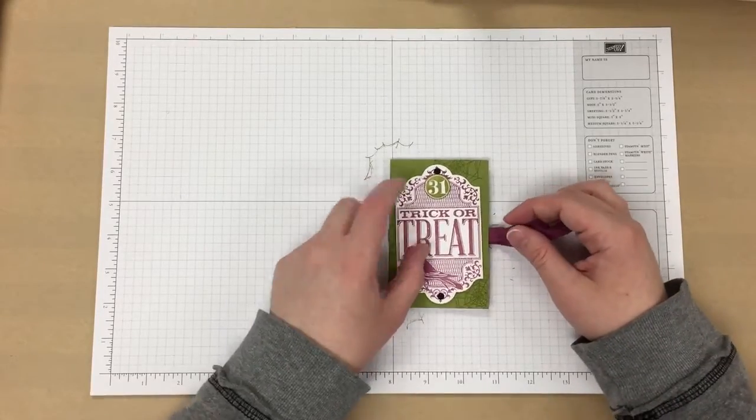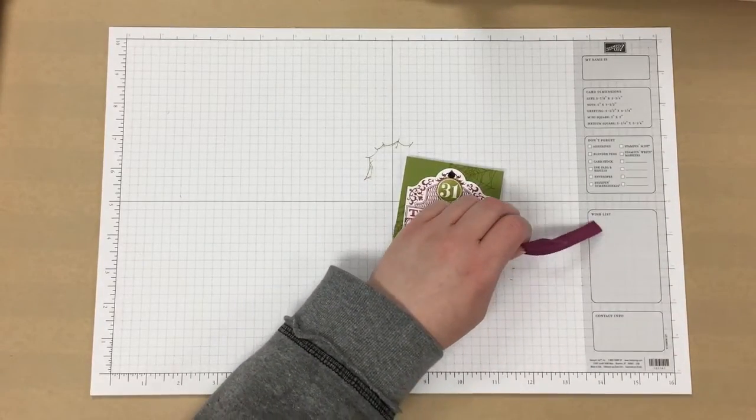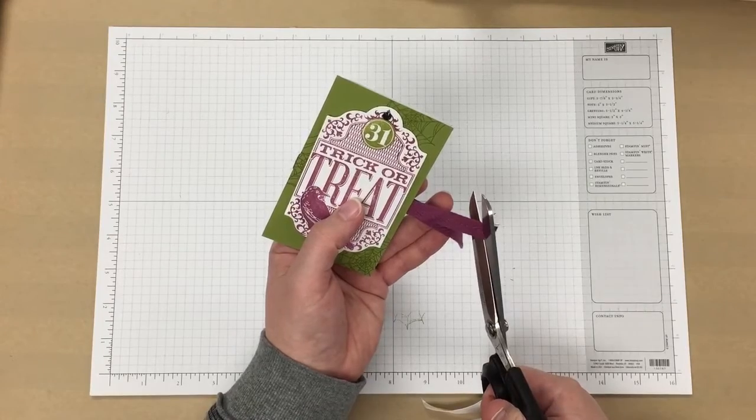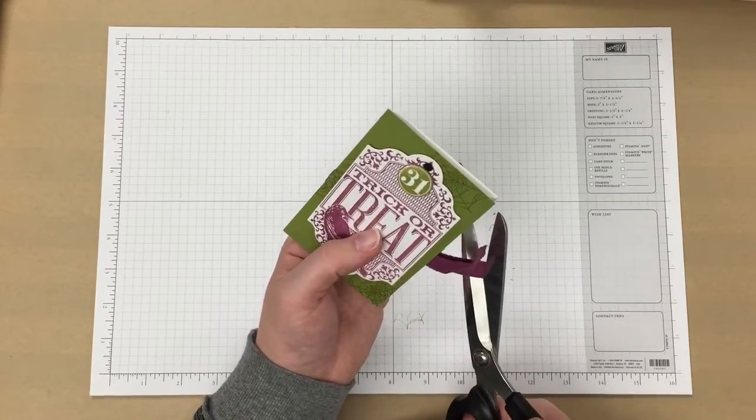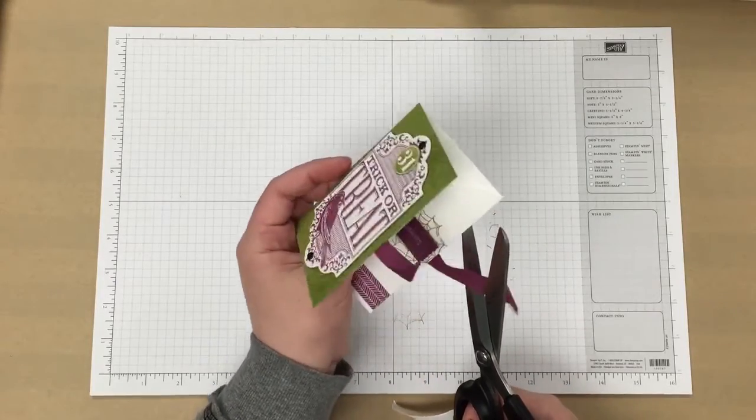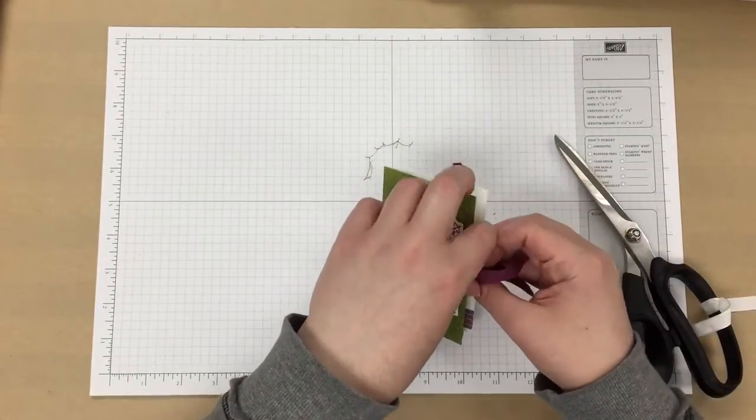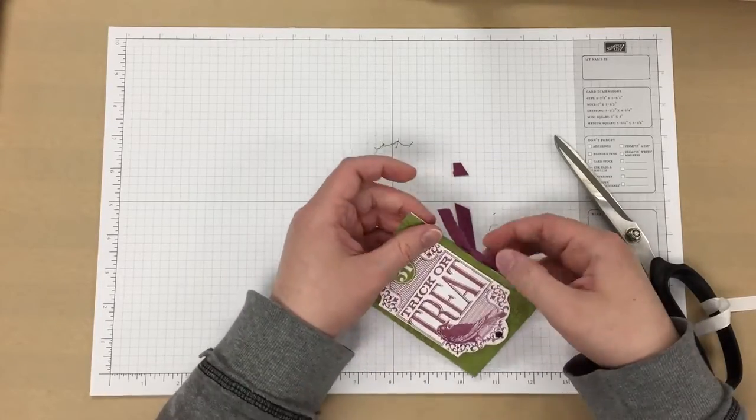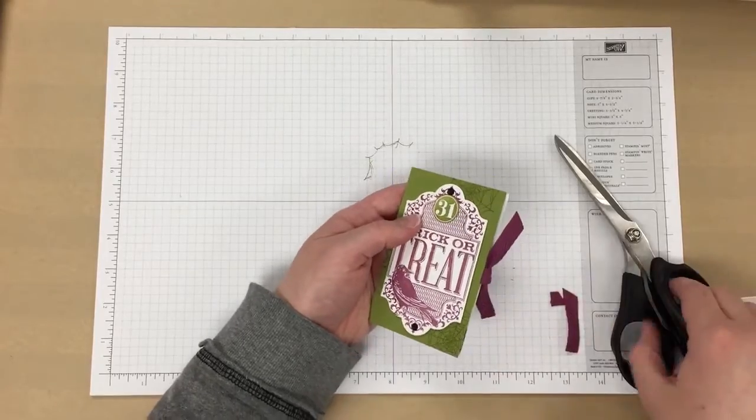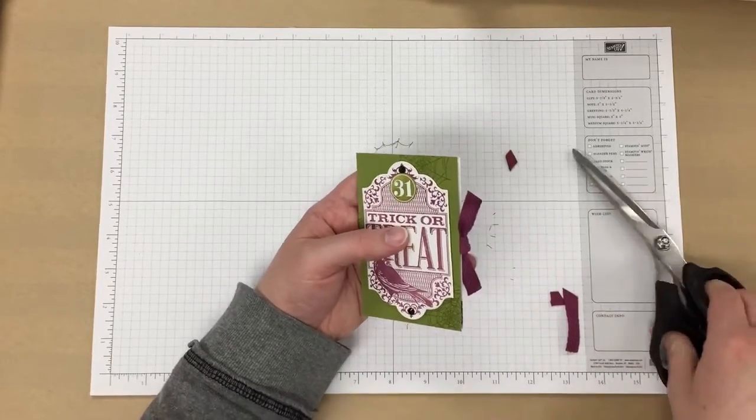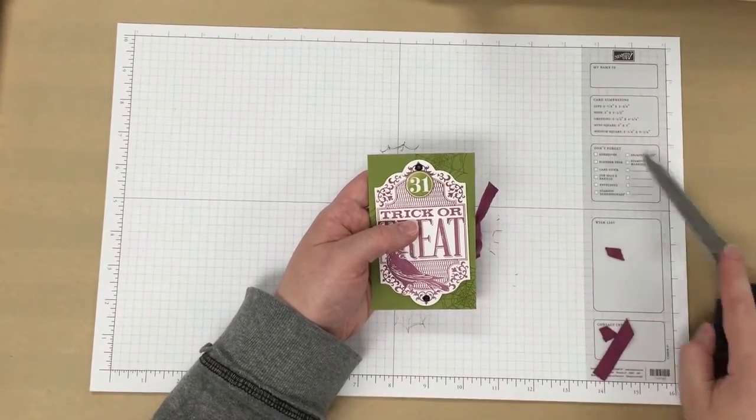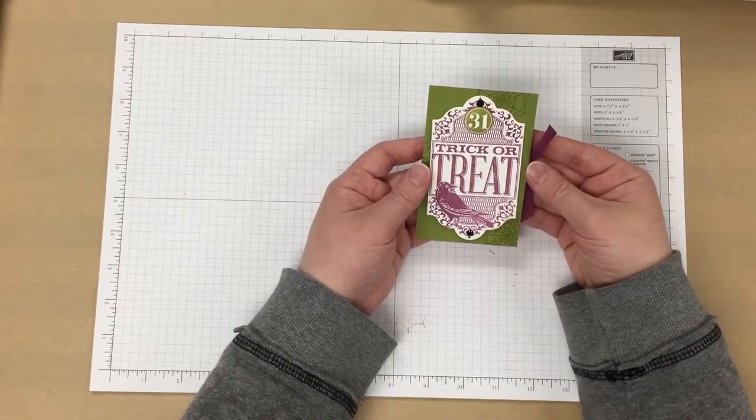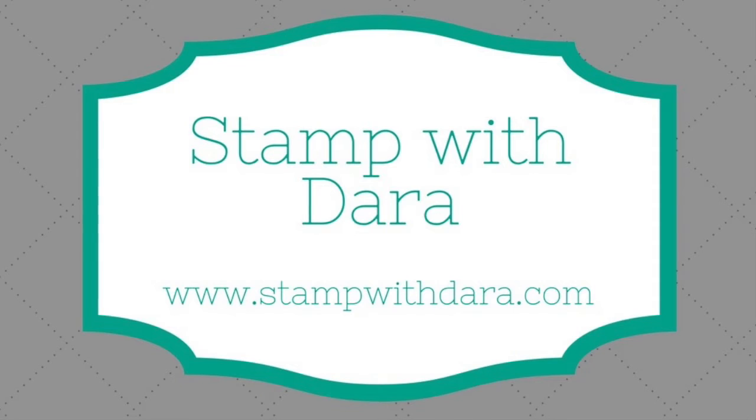So then all you need to do is tie - we're going to trim these down and tie it closed, like that, and trim it just a little more. And there you have your candy pouch from an envelope.